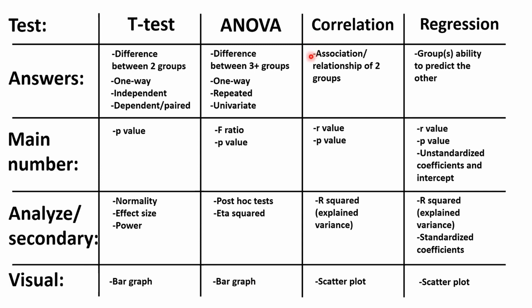Correlation is basically the association or relationship between two variables — how related are they to each other? When one goes up, does the other go up? When one goes down, does the other go down? This is probably the test you're most familiar with. The R-value tells you how correlated they are, and the p-value tells you how significant that relationship is. R-squared, or the amount of explained variance — so if your R was 0.7, your R-squared would be 0.49, meaning one variable can explain 49% of the variance in the other. That's how you analyze how strong the R-value really is. You would display this on a scatter plot.